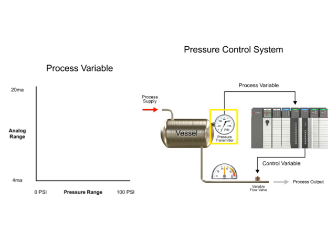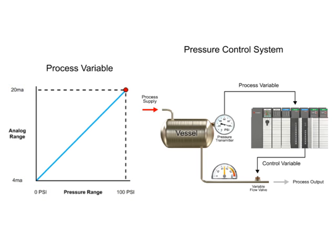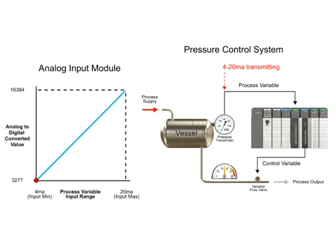The pressure transmitter, identified as the process variable, converts 0 to 100 PSI to a 4 to 20 mA signal. With a linear relationship, 0 PSI measured at the transmitter produces a 4 mA signal, and at 100 PSI, a 20 mA signal is produced. The analog input module converts the 4 to 20 mA signal to a digital value ranging from 3,277 to 16,384. A 4 mA signal results in a value of 3,277 and a 20 mA signal results in a value of 16,384.